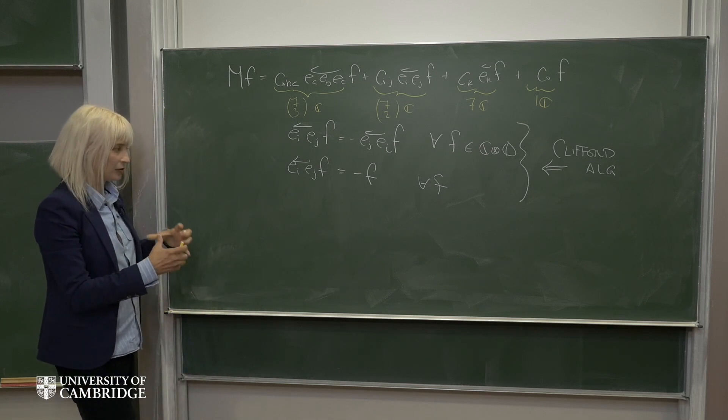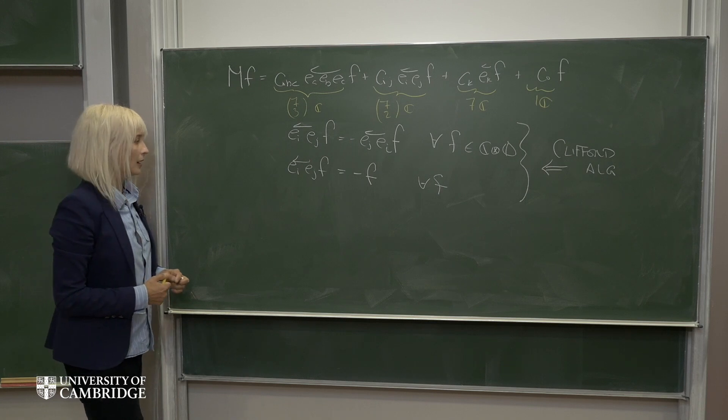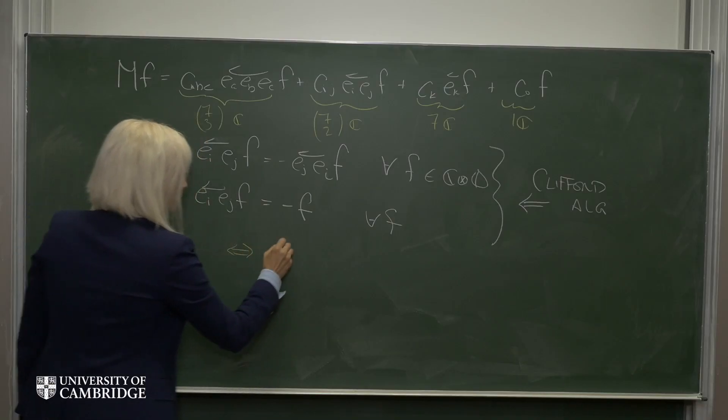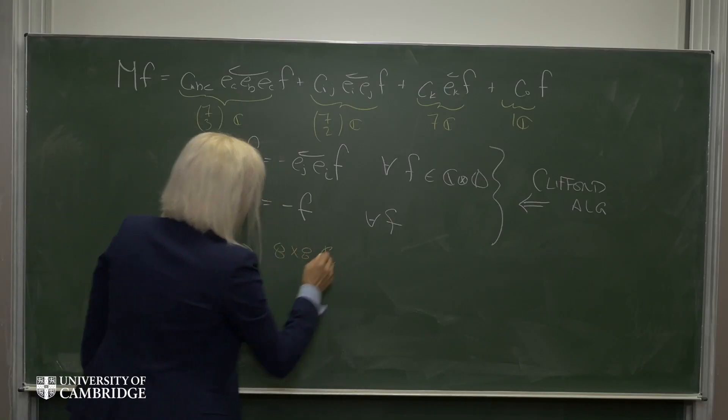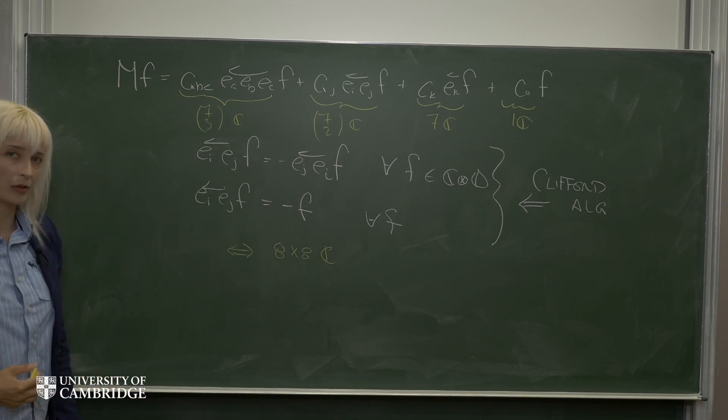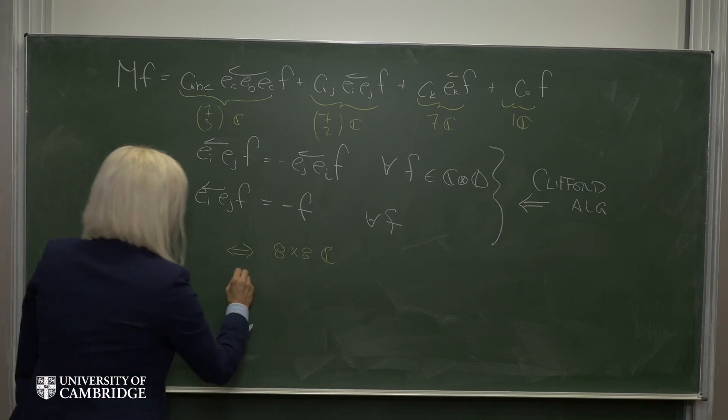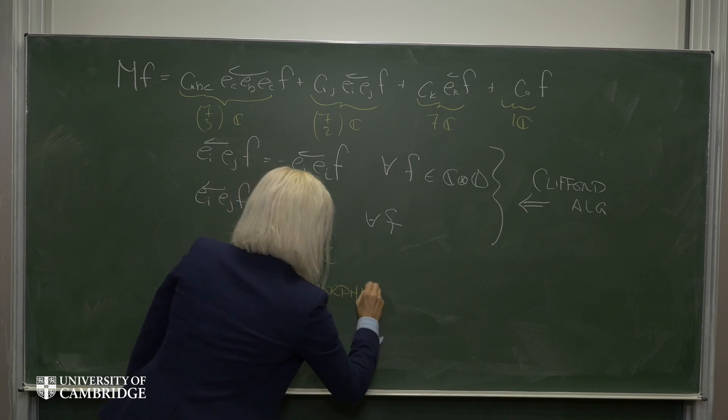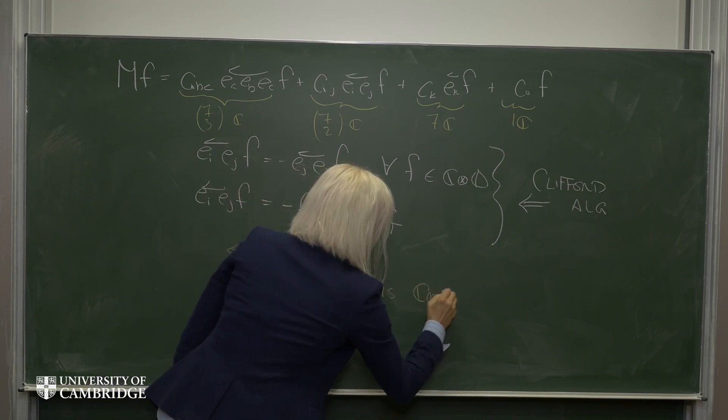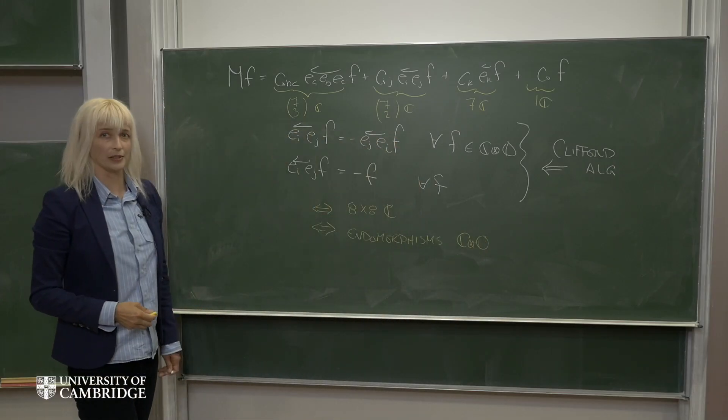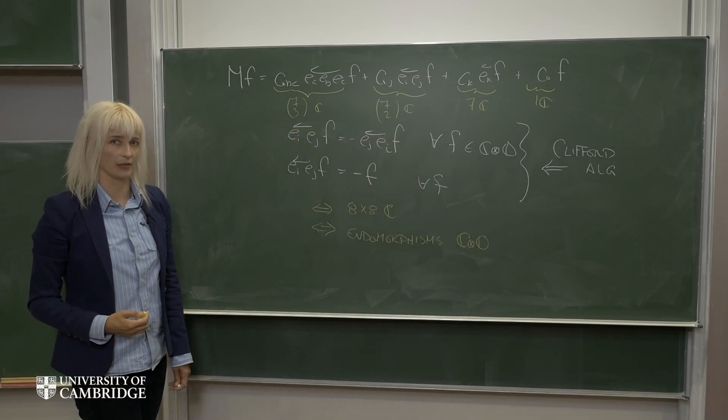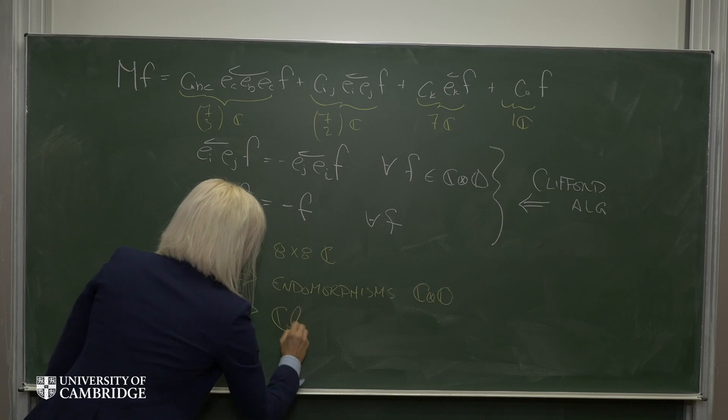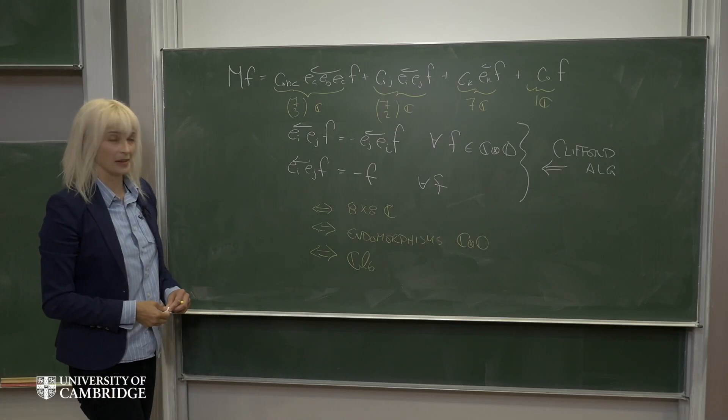So it turns out that the space of chains of complex octonions can be thought of as being equivalent to the eight by eight complex matrices. Or you can think of them as being equivalent to the endomorphisms on the complex octonions. Or finally, it turns out that they give a faithful representation of the complex Clifford algebra CL6. So in other words, now we have a Clifford algebra.